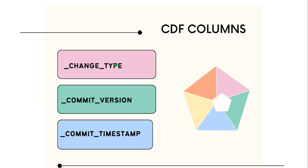For an update operation, CDF creates two versions: one is the previous version before the update, called 'update_preimage', and after making the update it creates a new version called 'update_postimage'. It also maintains the version number for each change made to the source table and records the timestamp of that particular change. With the help of these additional columns, we are able to identify changed, deleted, or newly inserted records and process only those records.